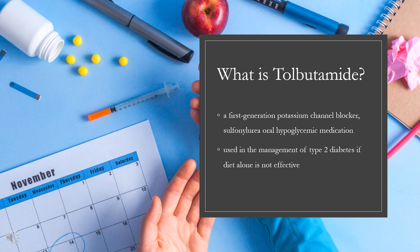Tolbutamide is a first-generation potassium channel blocker, sulfonylurea, oral hypoglycemic medication. This drug may be used in the management of type 2 diabetes if diet alone is not effective. Tolbutamide stimulates the secretion of insulin by the pancreas, and was discovered in 1956.